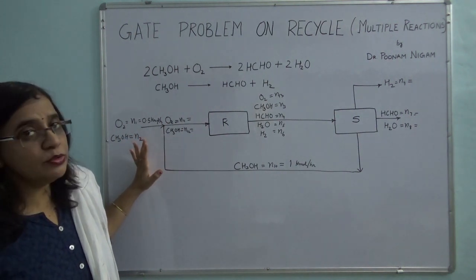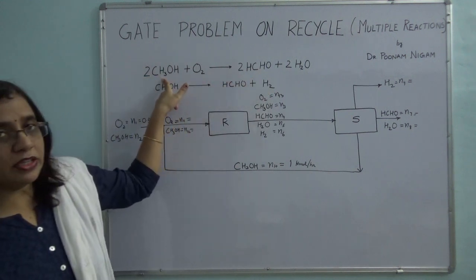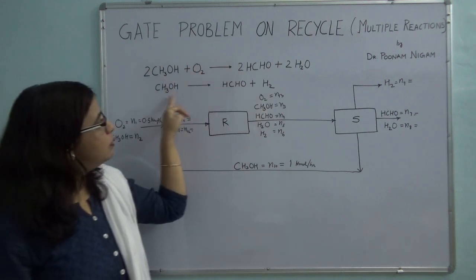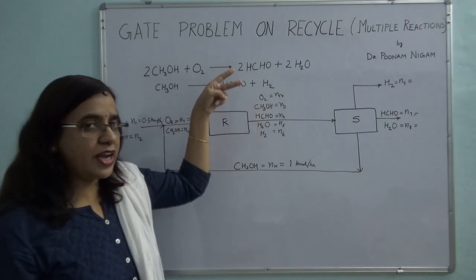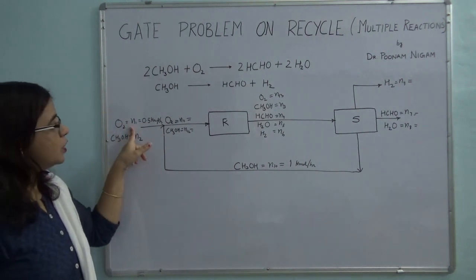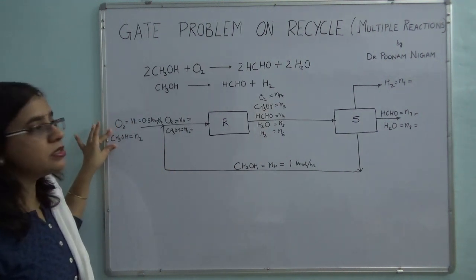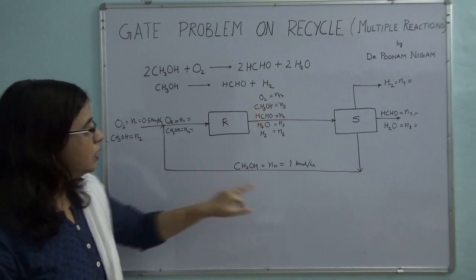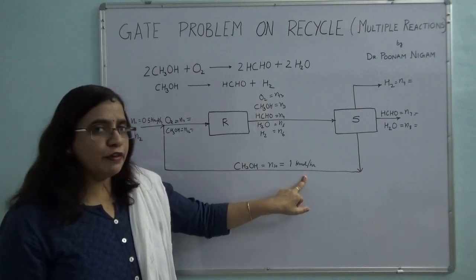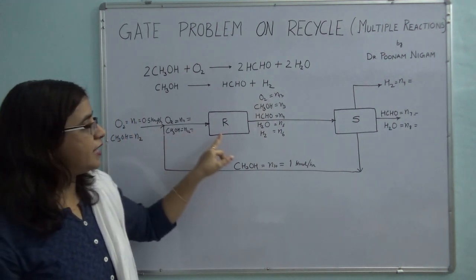I will explain the problem statement first. Two reactions are taking place — we are trying to make formaldehyde out of methanol. It is formed by two reactions: one is the oxidation of methanol and the other is the decomposition of methanol. You have a fresh feed which contains oxygen coming at 0.5 kilomoles per hour. Methanol is used in excess but its flow rate is not given. This mixes with the recycle stream which contains only methanol at 1 kilomole per hour, and the combined stream enters the reactor.